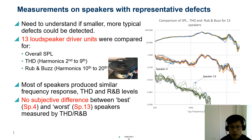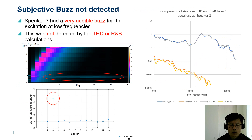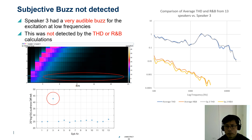At the same time, by listening to one of the loudspeakers, we could clearly hear an audible problem burst which was not detected by these metrics — that was loudspeaker 3, which had a very audible burst during excitation. To confirm that the traditional measures cannot detect this event, we compared the average THD and Rub and Buzz from 13 loudspeakers with the result of speaker 3. In terms of THD, they seem very similar. Rub and Buzz shows that speaker 3 is actually even lower compared to the average result. So clearly traditional measures cannot detect this event.